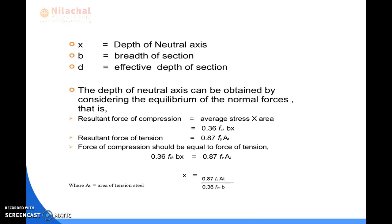The area of the compression zone is b×x, i.e., breadth times neutral axis depth. The tension force is found as 0.87Fy × Ast. Setting compression force equal to tension force: 0.36FCK × b × x = 0.87Fy × Ast. From this, the neutral axis depth is: x = 0.87Fy × Ast / (0.36FCK × b), obtained by equating the tension force and the compression force.